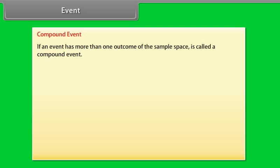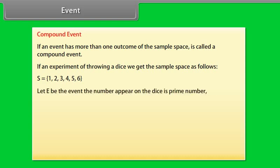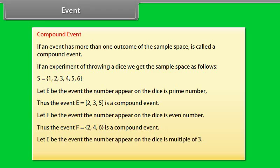Compound event: if an event has more than one outcome of the sample space, it is called a compound event. In an experiment of throwing a dice, S = {1, 2, 3, 4, 5, 6}. Let E be the event 'the number appearing on the dice is a prime number,' so E = {2, 3, 5} — a compound event. Let F be the event 'even number,' so F = {2, 4, 6} — a compound event. Let E be the event 'multiple of 3,' so E = {3, 6} — a compound event.